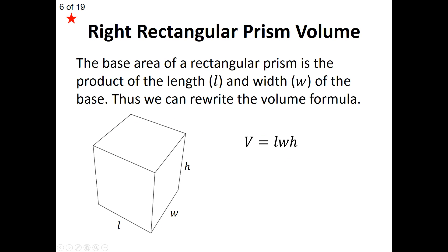There's also an alternate version specifically for the rectangular prism. If you're given the dimensions of a box, you can find the volume by simply multiplying those dimensions together: length times width times height. Length times width gives you the area of the base, so length times width times height gives you the volume — the same as base times height.